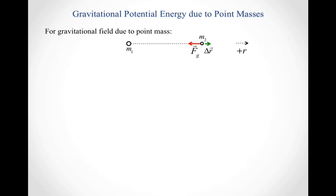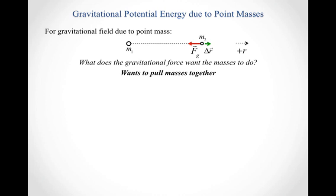We've talked about how to think conceptually about how the gravitational potential energy of some mass in the presence of other masses is changing. Now we want to be able to calculate that. Let's think about a simple situation where I have two masses, mass 1 and mass 2, and I'm going to move mass 2 farther away from mass 1. The gravitational force acting on mass 2 is going to try and pull it back because the gravitational force is always attractive.